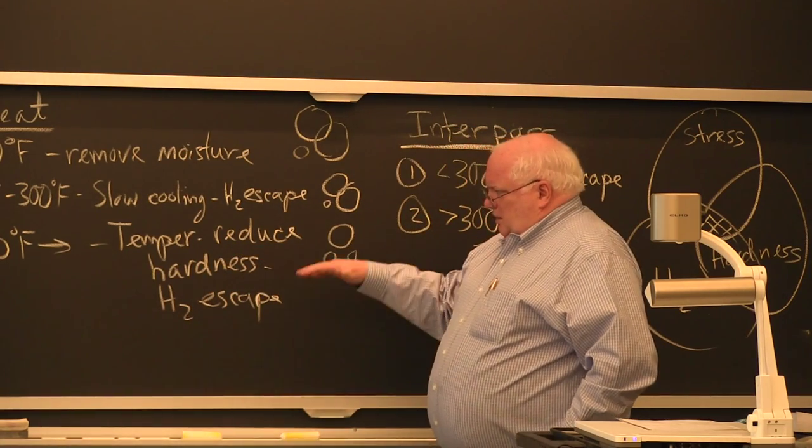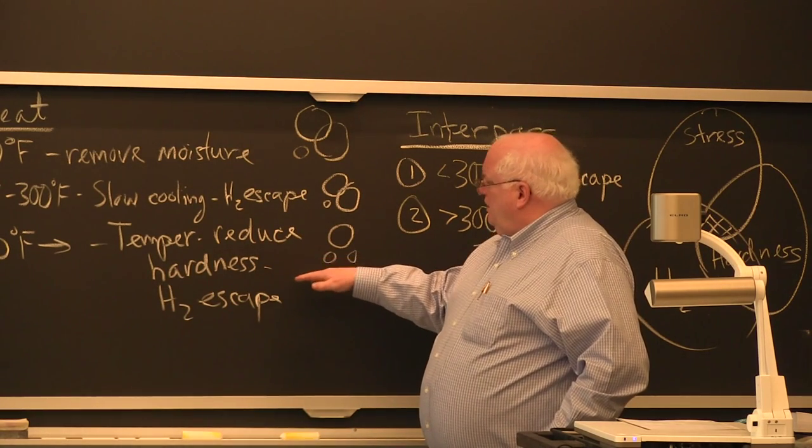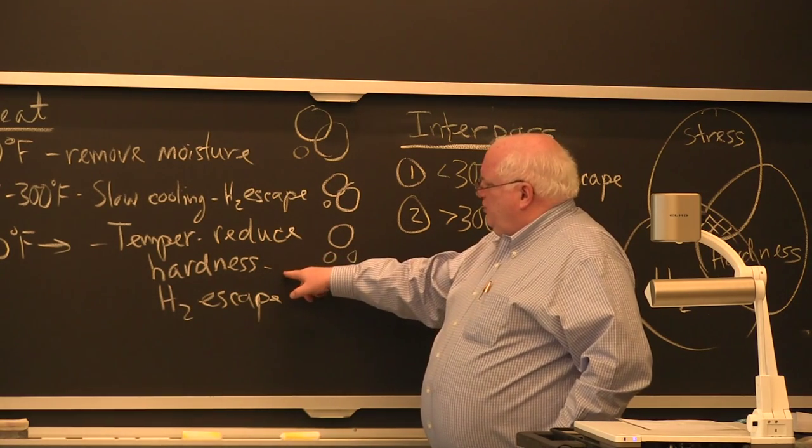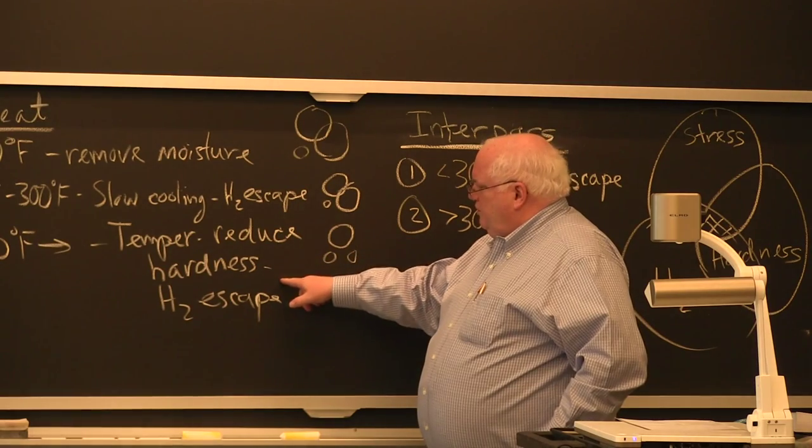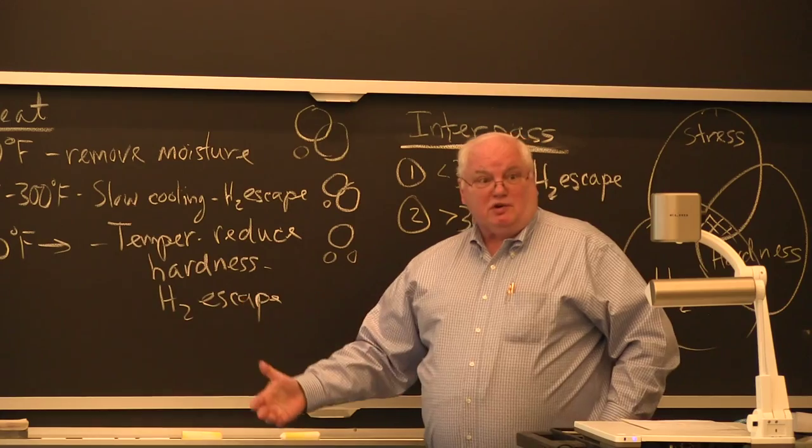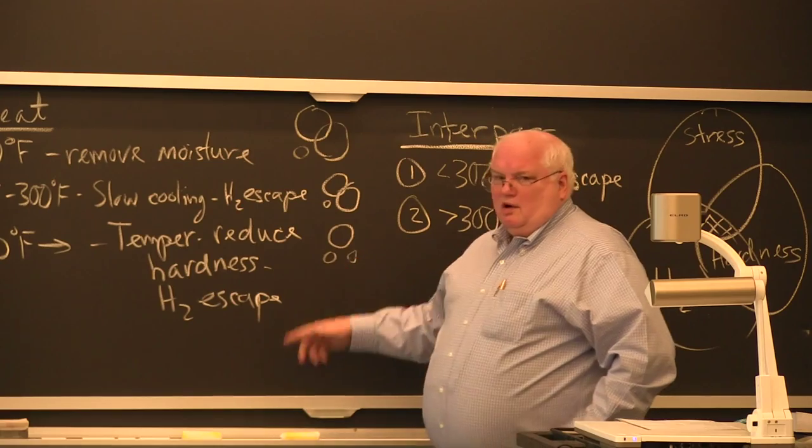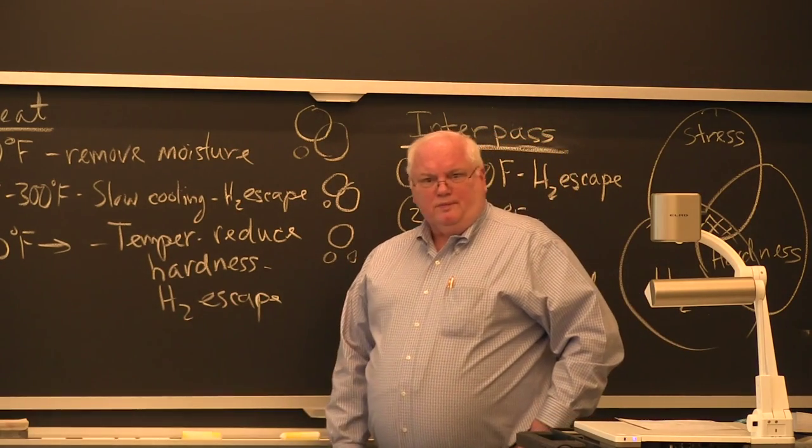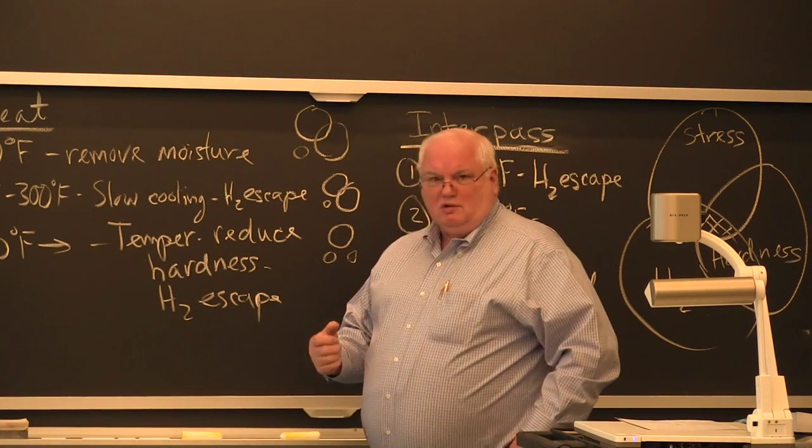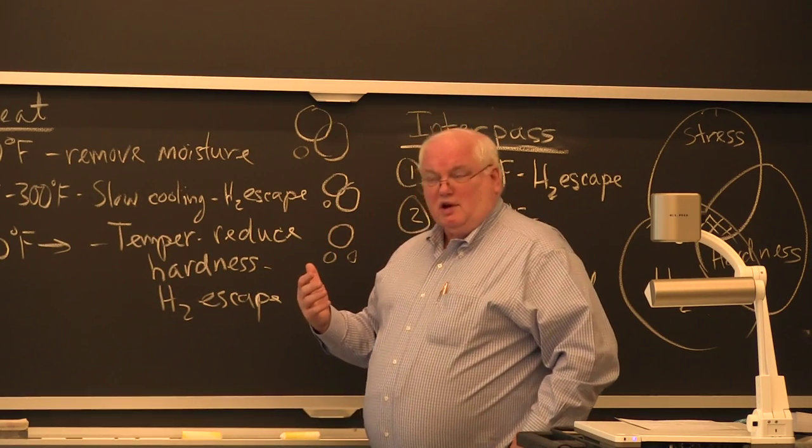The third one, if you're above 300 degrees you get tempering and you reduce that. Tempering will reduce the hardness and you're also trying to let the hydrogen escape even faster. The real thing is you're trying to temper so you're reducing hardness by tempering, you're also getting rid of hydrogen more quickly. So you're reducing two circles. You haven't changed the residual stresses.